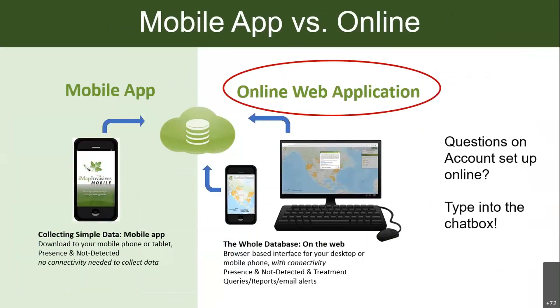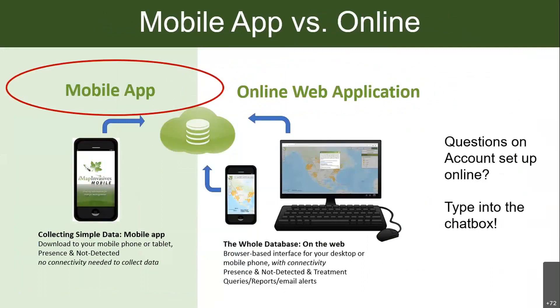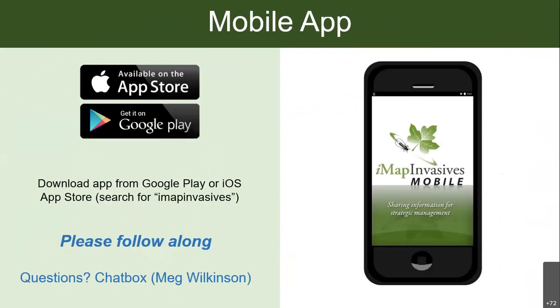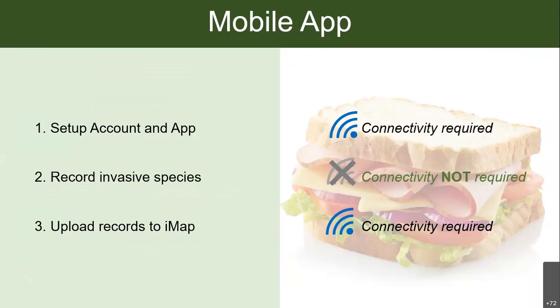Now that your IMAP account is set up, we can switch to the mobile app. Go to the Apple App Store or Google Play and download the IMAP Invasives mobile app. I like to think of the workflow as a sandwich: for the first step you need connectivity to set up the app, then you're free to go out into the field without connectivity, but for the last step — the bottom slice of bread — you need connectivity again to upload data to the database.